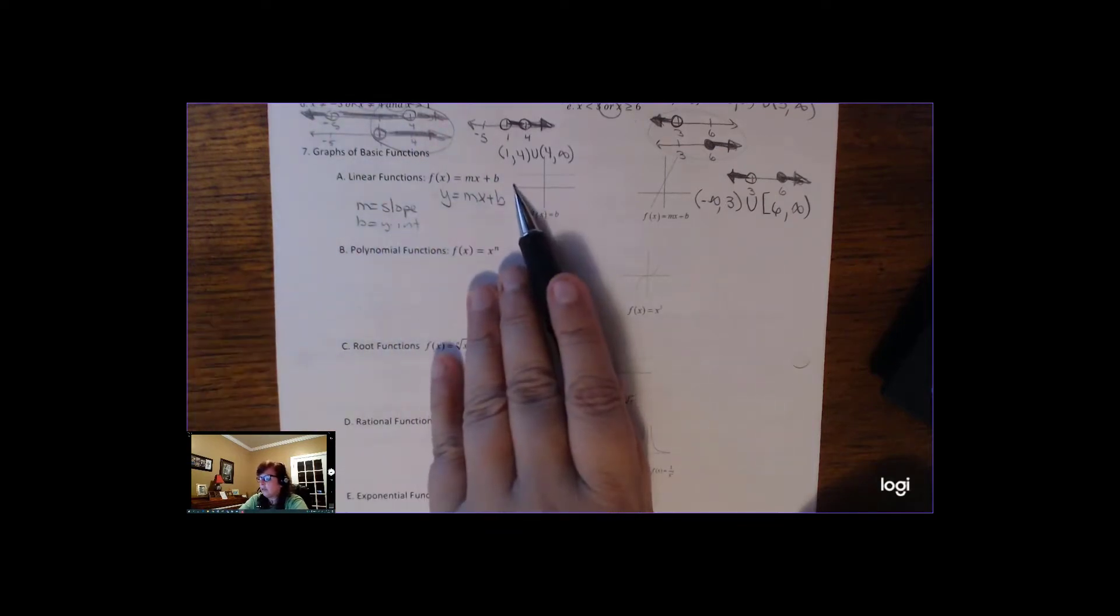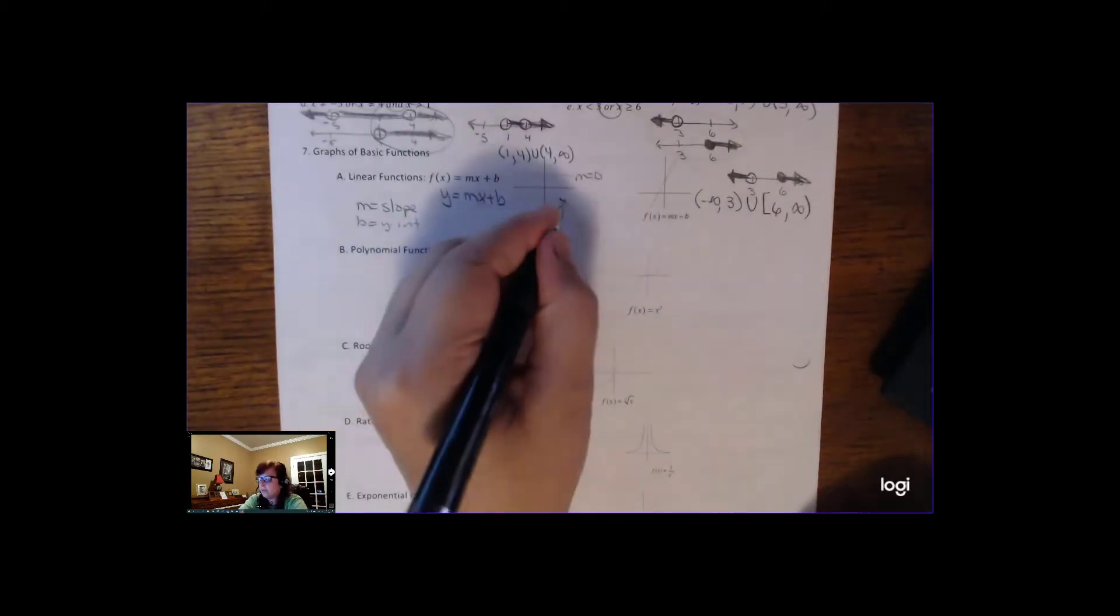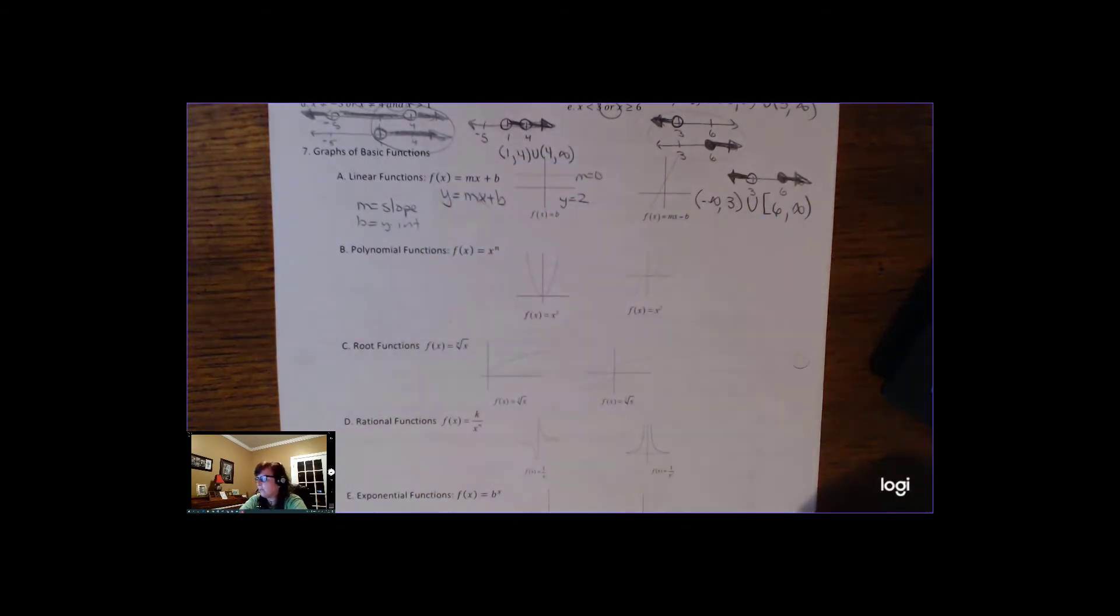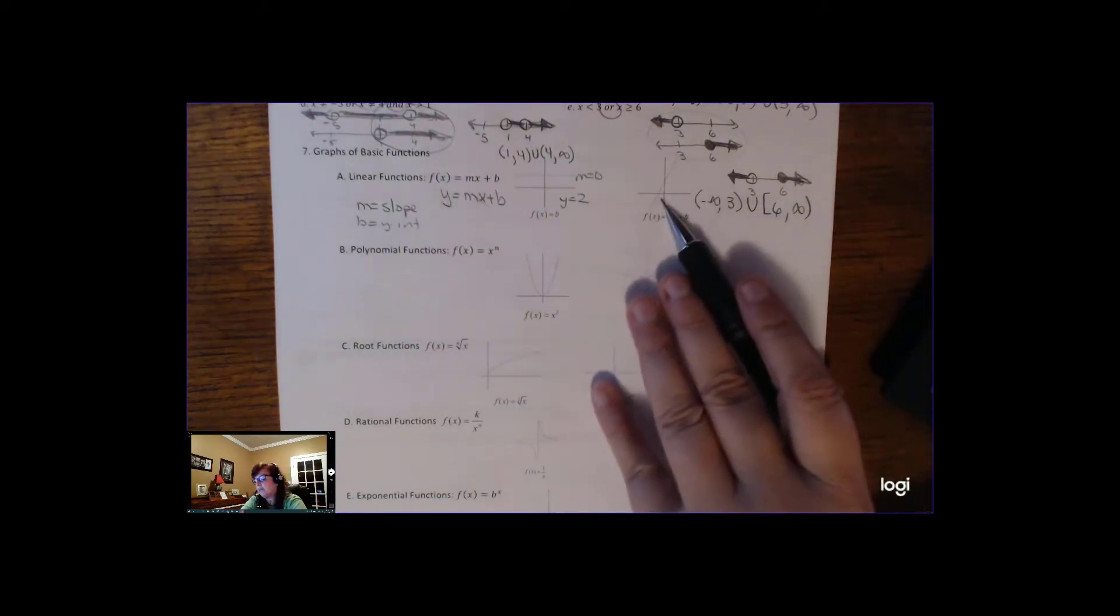But right now we're just looking at the graphs. This is a horizontal graph. This has a slope of 0. So that's what we were talking about, like y equals 2. We've graphed those some today. This diagonal line, that's y equals mx plus b.